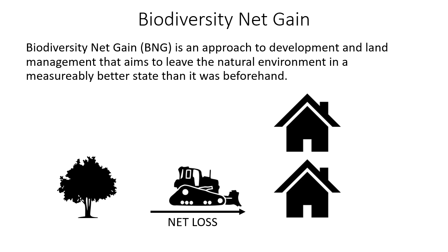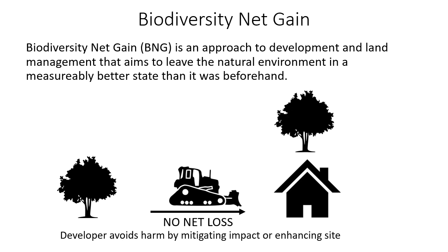Biodiversity net gain is quite a simple concept in principle — the understanding that we want to approach land development with the aim of leaving it in a measurably better state than it was before. Under a standard development scenario, habitat gets lost, and that's the primary driver of biodiversity loss around the planet. As an alternative, a policy of no net loss was introduced, intended for a developer to follow a mitigation hierarchy: avoid destruction of habitat as much as possible, mitigate the impact, and if that impact cannot be avoided, offset those losses — trying to meet the losses through an equivalent standard.